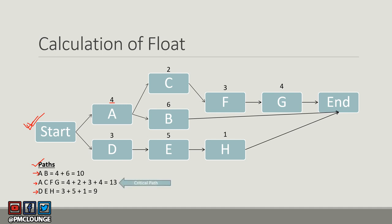We already know that ACFG is the critical path because its duration is the highest at 13. This was covered in our video on critical path. Now let's calculate float.